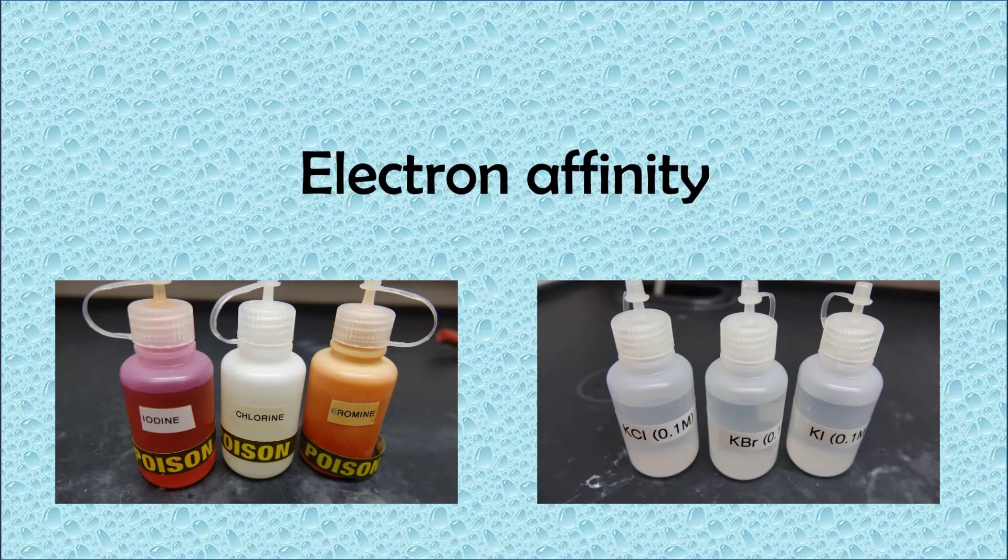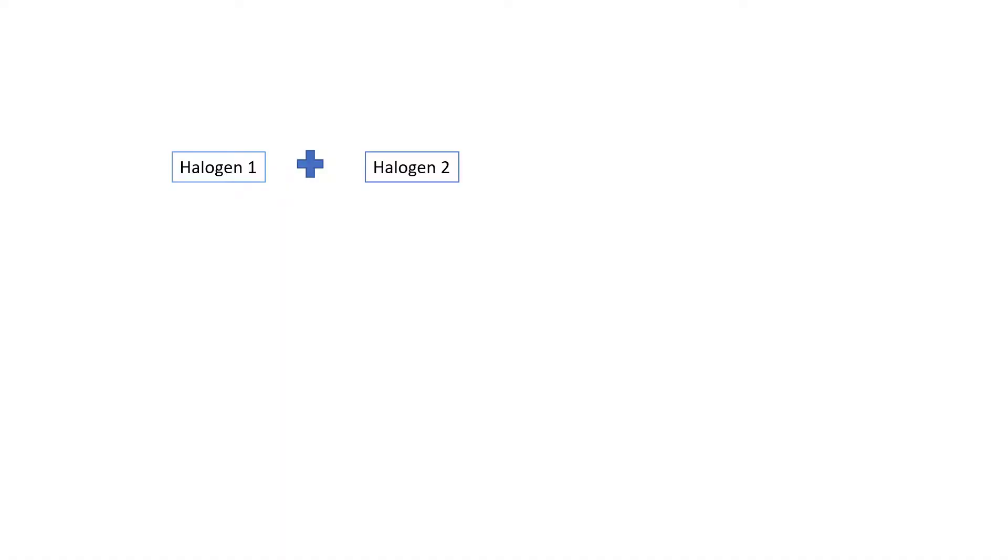In today's lab we will determine the relative electron affinity of three different halogens. Electron affinity is essentially how much a molecule wants an electron.